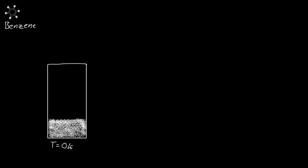Let's assume we have a system that has liquid benzene in it, and it is at zero Kelvin. Zero Kelvin is the lowest temperature anything can be at — we humans have never seen it exist. That is actually negative 273 degrees Celsius, extremely cold, colder than liquid nitrogen or dry ice. Kelvin is the unit for the absolute temperature scale.